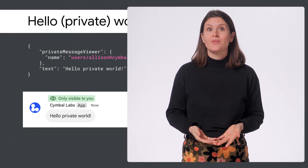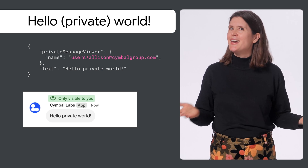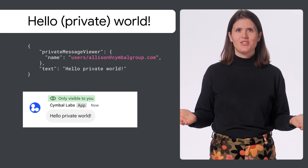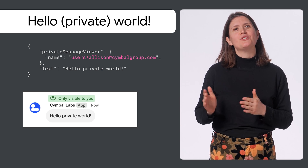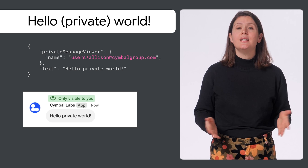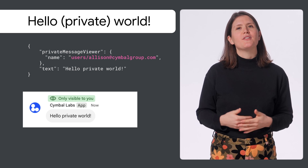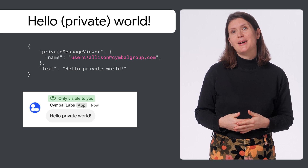So how does a chat app send a private message? You create the message just like any other chat message, and then include the private message viewer object in your request and specify the Google Chat user who should receive the message.